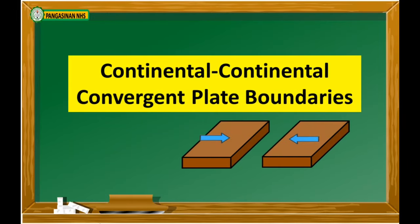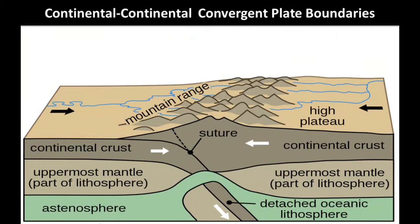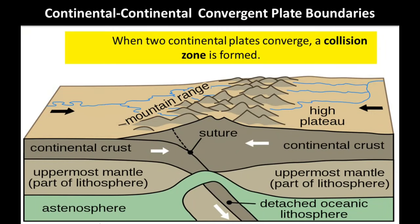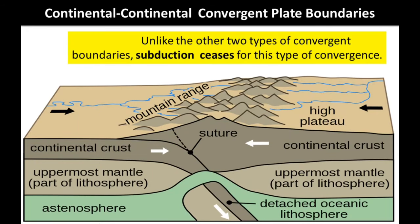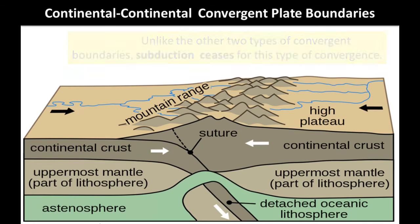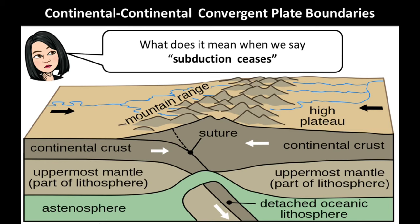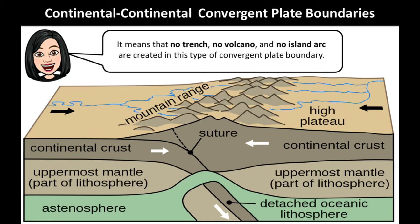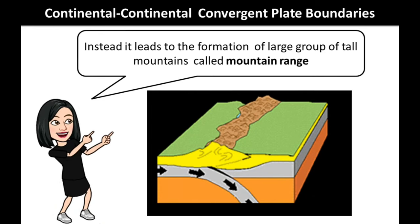Continental-continental convergent plate boundaries: when two continental plates converge, a collision zone is formed. Unlike the other two types of convergent plate boundaries, subduction ceases for this type of convergence. This means that no trench, no volcano, and no island arc are created. Instead, it leads to the formation of a large group of tall mountains called a mountain range.